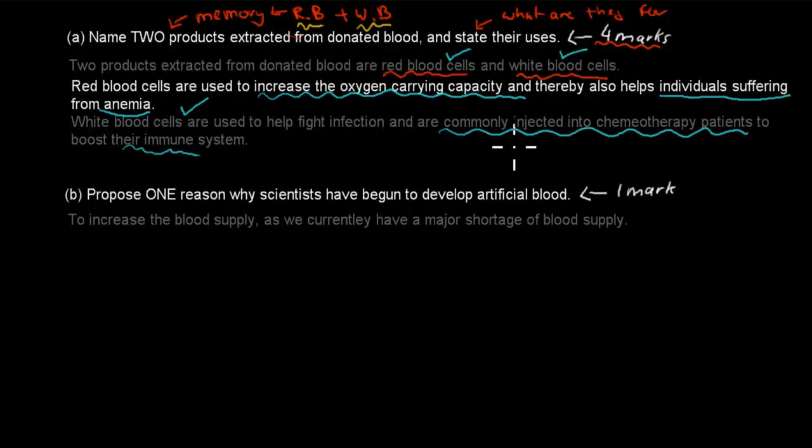But when it comes to what we use in terms of medicine, we use white blood cells because we can inject those into people who undergo chemotherapy. Remember, that was for people with cancer, chemotherapy. And those patients benefit because it boosts their immune system. That's also one mark. So for this kind of answer, we get four marks out of four.